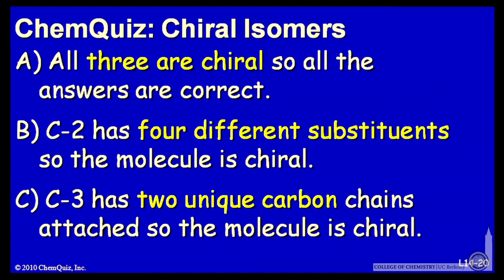Let's look at possible answers for each of the three choices. A: all three are chiral, so all the answers are correct. B: carbon 2 has four different substituents, so the molecule is chiral. Or C: carbon 3 has two unique carbon chains attached, so the molecule is chiral. Think about those for a minute and make a selection.